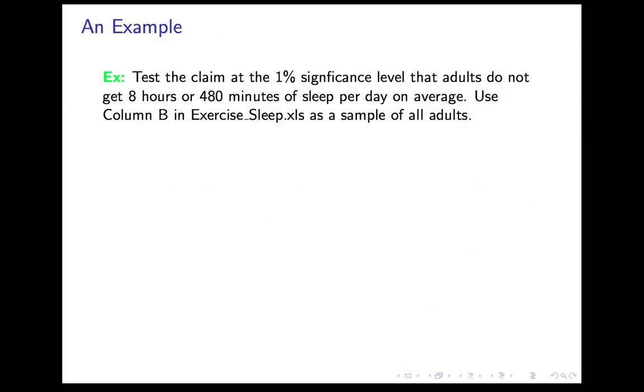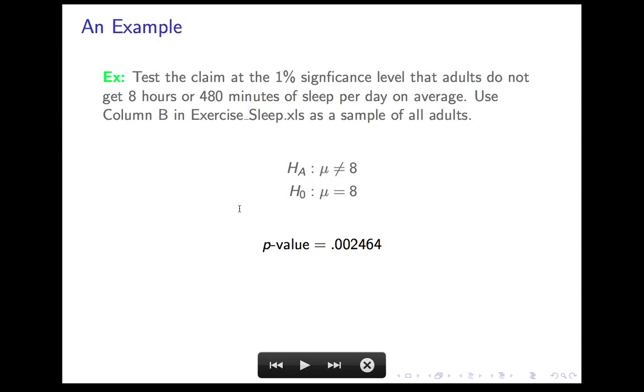Alright, let's do an example. Let's test the claim at the 1% significance level that adults do not get eight hours of sleep per day on average. We use column B in the exercise sleep example on my webpage as a sample of all adults. So our alternate hypothesis is that the average amount of sleep people get per day is different from eight hours. There's no direction suggested in the question, so you use not equal. In general, if you're not sure from the question which direction to use, use the two-tailed alternative. That is the safe choice. Of course, the null hypothesis is μ is equal to eight. Here, I've expressed it in hours. The data, we'll see, is in minutes, so we should really use 480 when we enter in the template. So let's see where I got that p-value from.